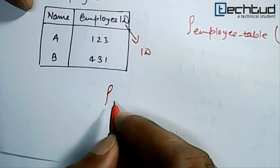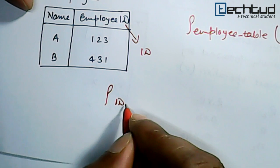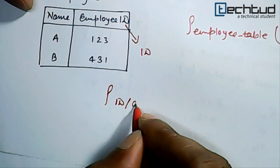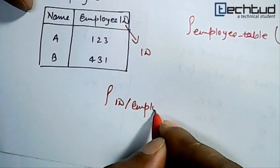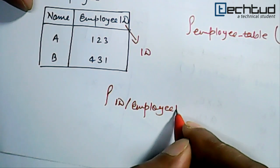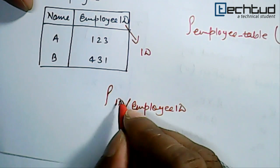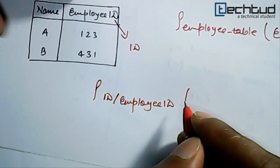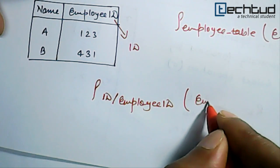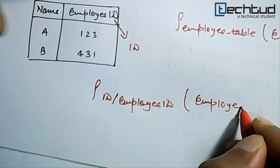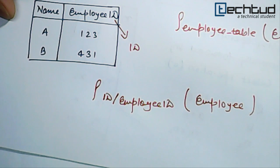EmployeeID will be renamed as ID, and which table? EmployeeTable. So in this case, what will happen?